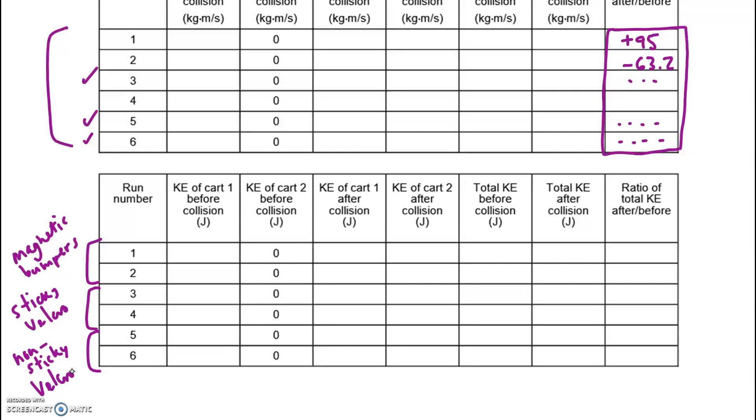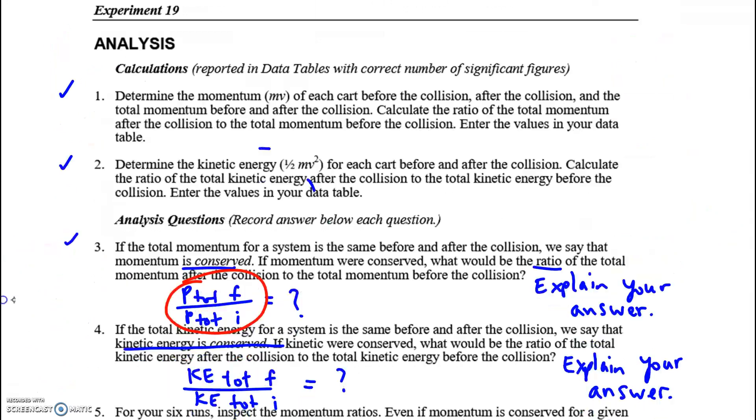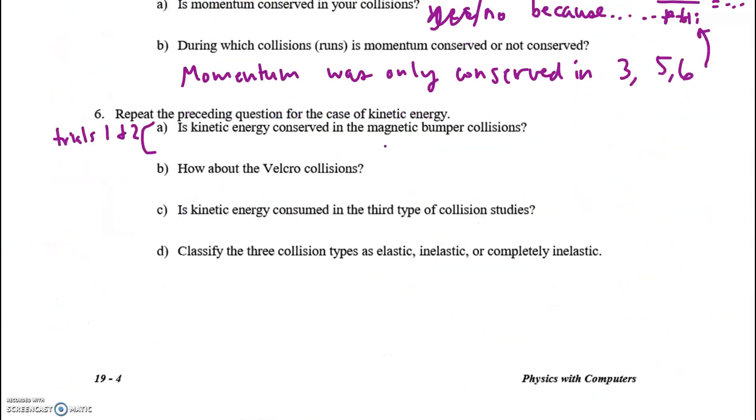Okay, and for part A, they're saying, look at the ratio of KE total final divided by KE total initial. And there's a special value we expect to see when kinetic energy is conserved. Do you see that special value in the first two trials where we had magnetic bumpers? Part B, so yes or no.